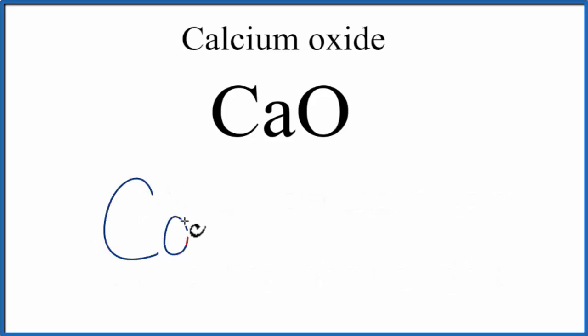So we'll write Ca, and calcium is in group 2 on the periodic table, it has two valence electrons. We'll then write the oxygen atom, and oxygen is in group 16, sometimes called 6A, it has six valence electrons.